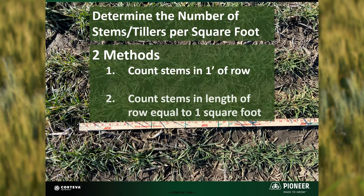We will discuss two methods for estimating plant populations. One strategy is to count the stems in a foot of row and use an equation to determine the number of stems per square foot. With the other method, you count the number of stems in a length of row equal to one square foot.